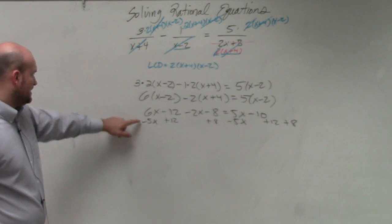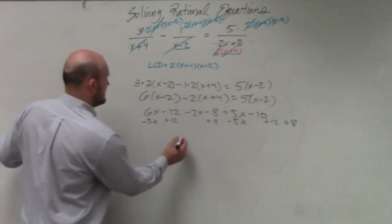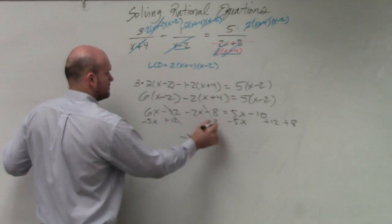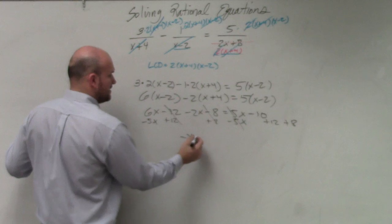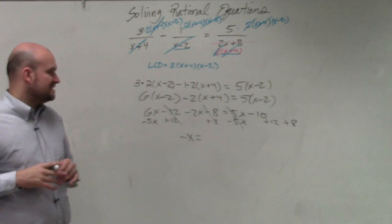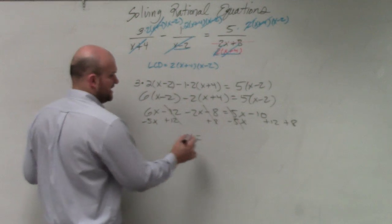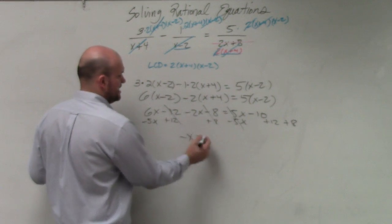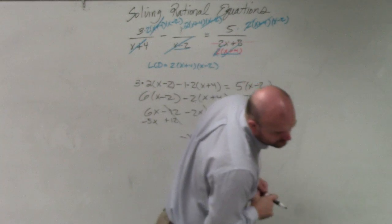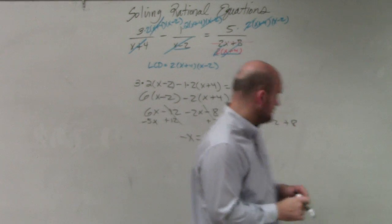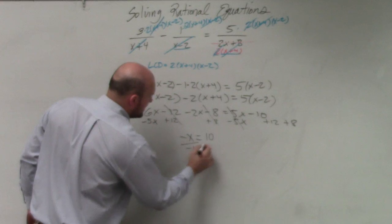So therefore, it looks like I'm going to have 1x, so I'm going to have a negative x. And then equals negative 10 plus 12 is going to be a positive 2. And then we'll just divide by negative 1.